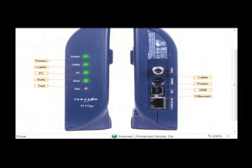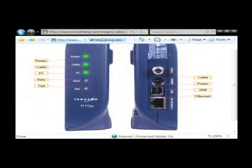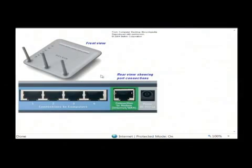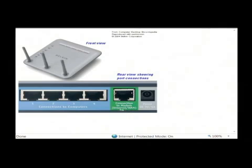Or if you have an ethernet connection, which I would suggest, you can plug that into what's called a router. Here I have an image of a router — this is a wireless one, as you can tell by the antennas, and it puts out a wireless signal. Those ethernet cables plug into the back of the router where it says connection to modem or WAN for wide area network, and it splits that internet connection out to multiple computers, including wireless laptops and other wireless devices.